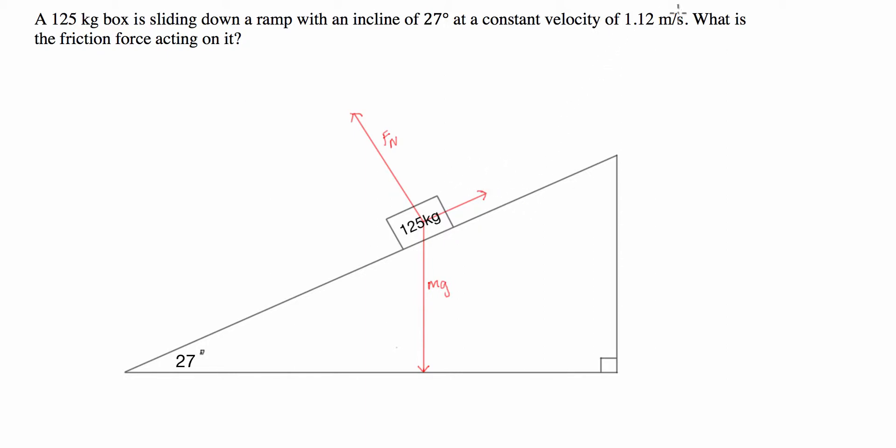So let's try and go about solving this question. To start with, what we know is the velocity of the box is constant. So if the velocity of the box is constant, what that tells us is that the acceleration is equal to zero.